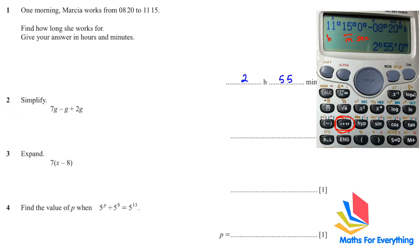Part 2, simplify. 7g minus g plus 2g. They are all g. Negative g means there is a 1 here. So there is negative 1g. You can put in your calculator 7 minus 1 plus 2, and you will get 8g.